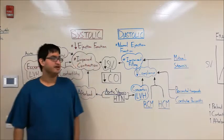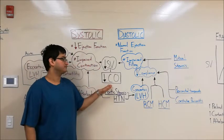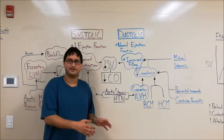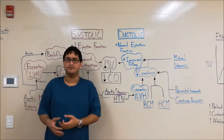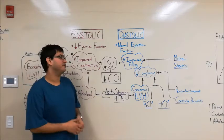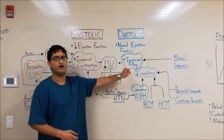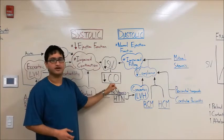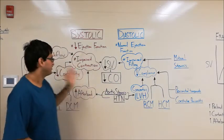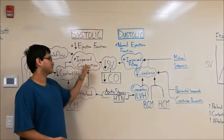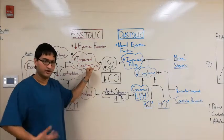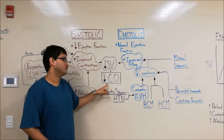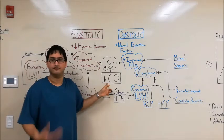The main problem with heart failure is a decreased cardiac output. When thinking about heart failure in terms of diastolic versus systolic, in diastolic heart failure you have impaired filling of the ventricle, which leads to decreased stroke volume and decreased cardiac output. In systolic heart failure you have impaired contraction of your ventricle, which also leads to decreased stroke volume and decreased cardiac output — the main hallmark of heart failure.